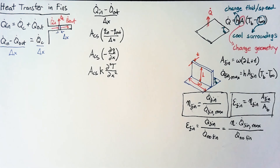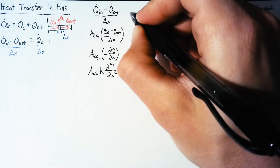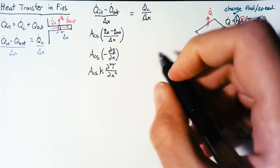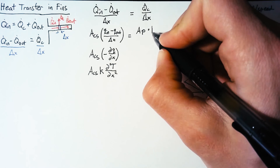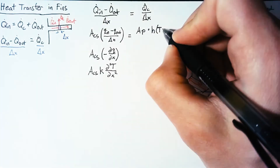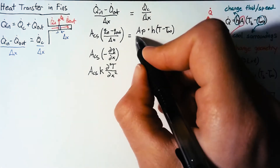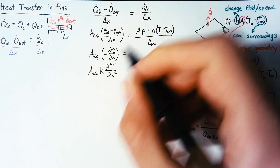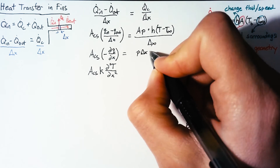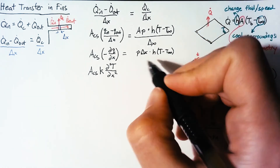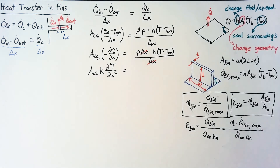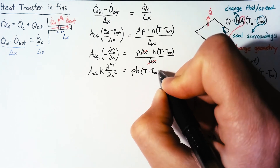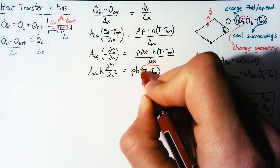This looks the same as for 1D conduction. On the right-hand side, q-dot convection over delta-x uses the area of that surface, which we call the area of the perimeter. That area is just the perimeter multiplied by delta-x, times h, times the temperature at this point minus T-infinity. The delta-x cancels, so what we're left with on the right-hand side is just P times h times the difference in temperatures.